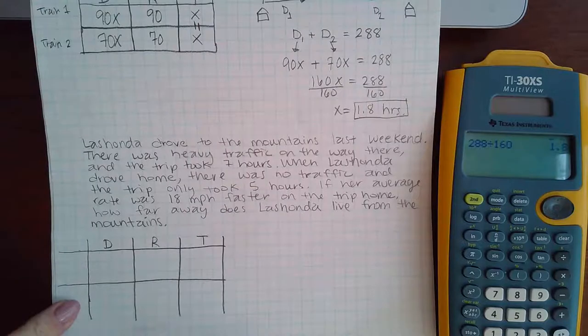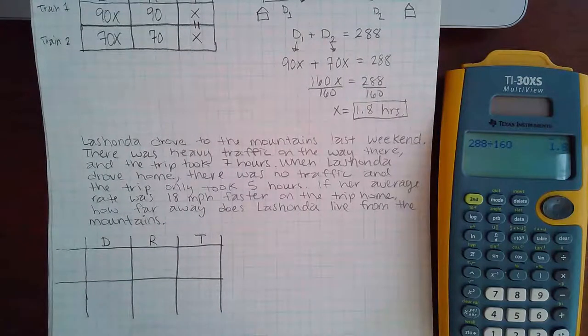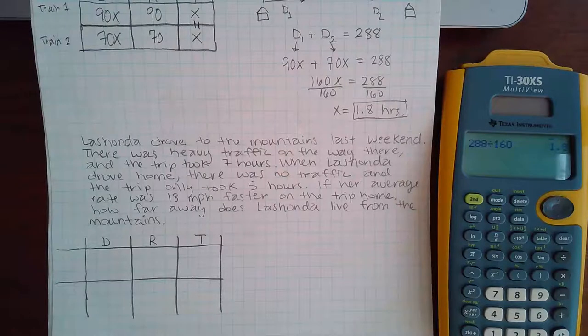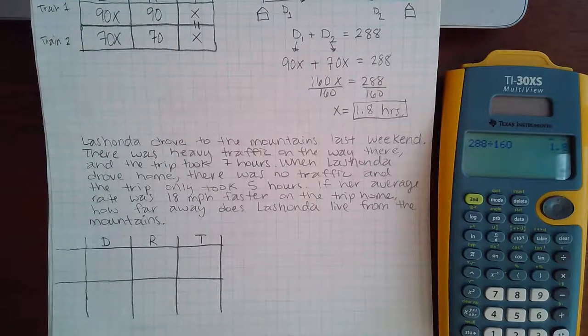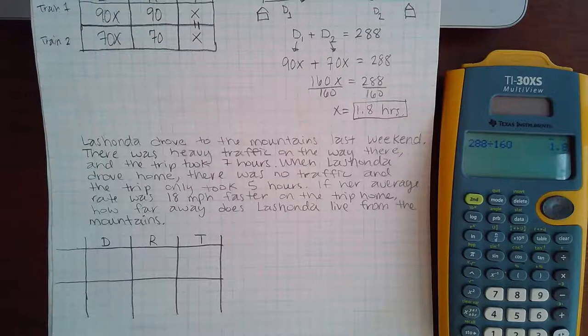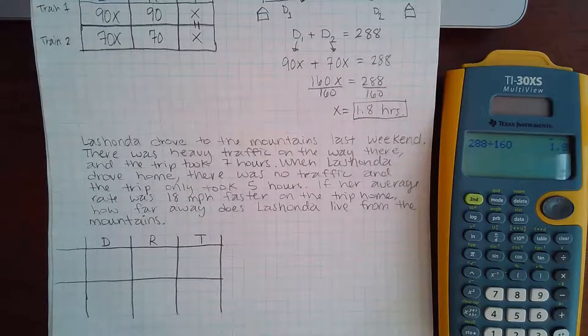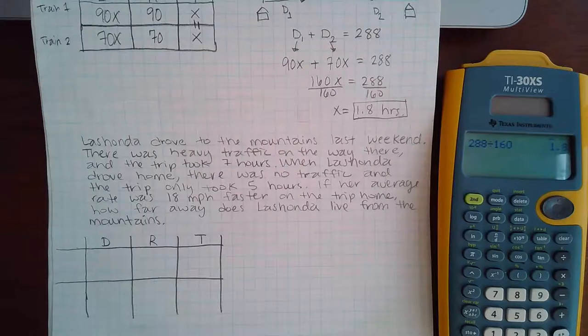I don't know what the labels are here, but we'll start reading. So it says that LaShonda drove to the mountains last weekend. There was heavy traffic on the way there, and the trip took seven hours. When LaShonda drove home, there was no traffic, and the trip took only five hours. If her average rate was 18 miles faster on the trip home, how far away does LaShonda live from the mountains?